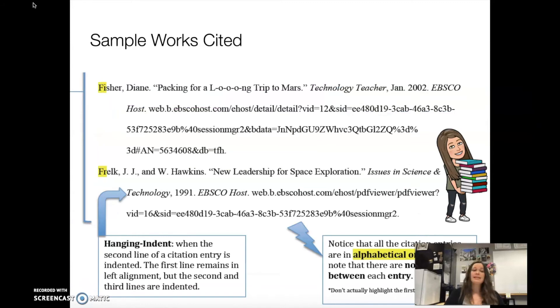Some more formatting basics. You need to have a hanging indent. A hanging indent means that the first line of your citation is not indented, but every line after within that citation is indented. So it's when the second, third, and even fourth or fifth lines of a citation are indented, but the first one is not. Again, everything should be in alphabetical order, and there are no extra spaces between each entry. Please also, I have the first letters highlighted on this. Do not do that on your actual works cited. I just did that for emphasis.